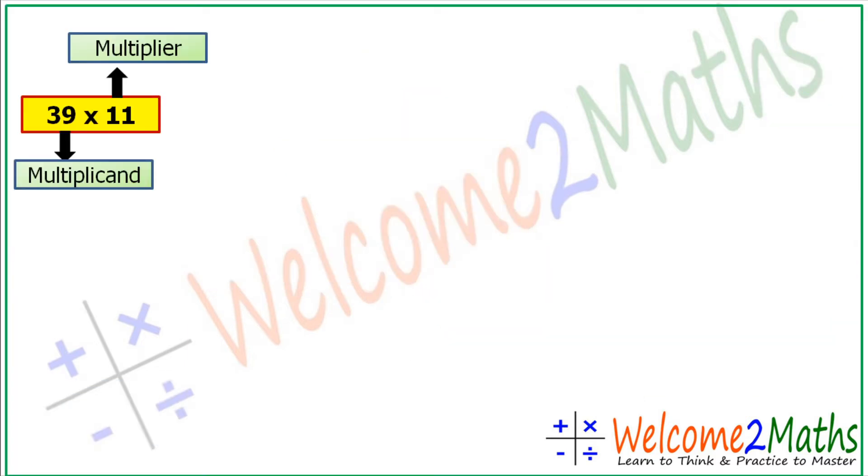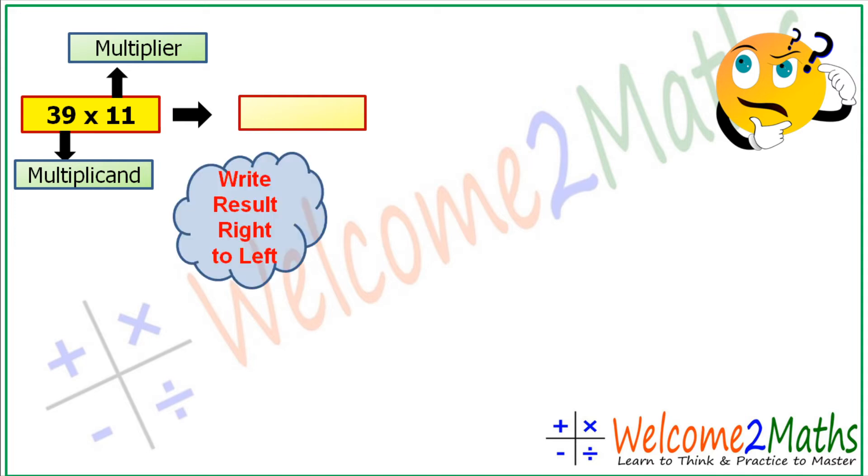So let's start. Let's see what today's question is: 39 into 11. So we have to multiply 39 by 11. 39 is the multiplicand and 11 is the multiplier. Let's see how we multiply it mentally. Remember one thing: we write the result from right to left.